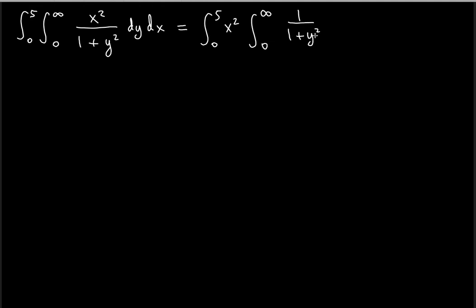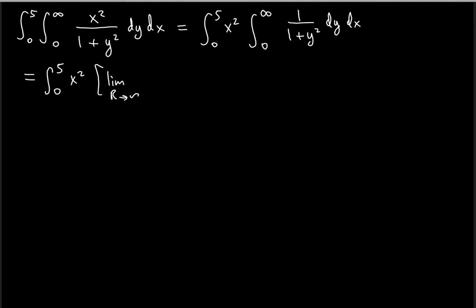The integrand is one over one plus y squared, and it blows up when y equals infinity, because you'd have one over infinity. You can't have that — you need to use limits. So instead of the infinity sign, place r. Write this as from zero to five for x squared, then the limit as r approaches infinity, with the inner integral from zero to r.